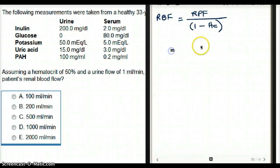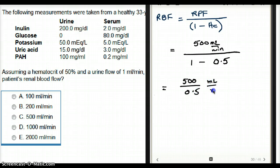So our renal plasma flow was 500 milliliter per minute divided by 1 minus hematocrit. Hematocrit is 50%, so I'm going to say 0.5. So now we have 500 divided by 0.5 milliliter per minute.